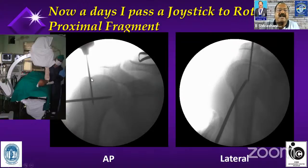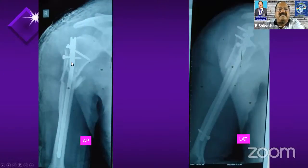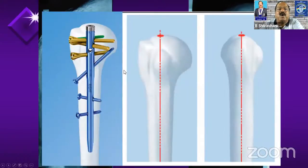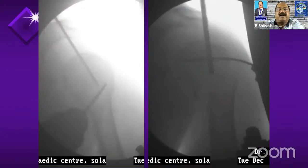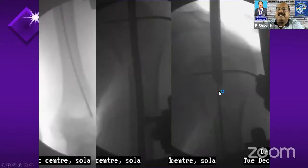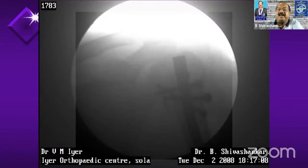The K-wire is inserted at the junction of articular and non-articular portion. For upper third fractures of the humerus, varus can happen at the fracture site. Proximal humerus nails available are all straight and require entry in line with the medullary canal, through the articular surface. For a very proximal fracture, I normally take entry from the proximal-most part in the articular surface which is in the center along with the shaft. Having a joystick K-wire helps in reducing the fracture.